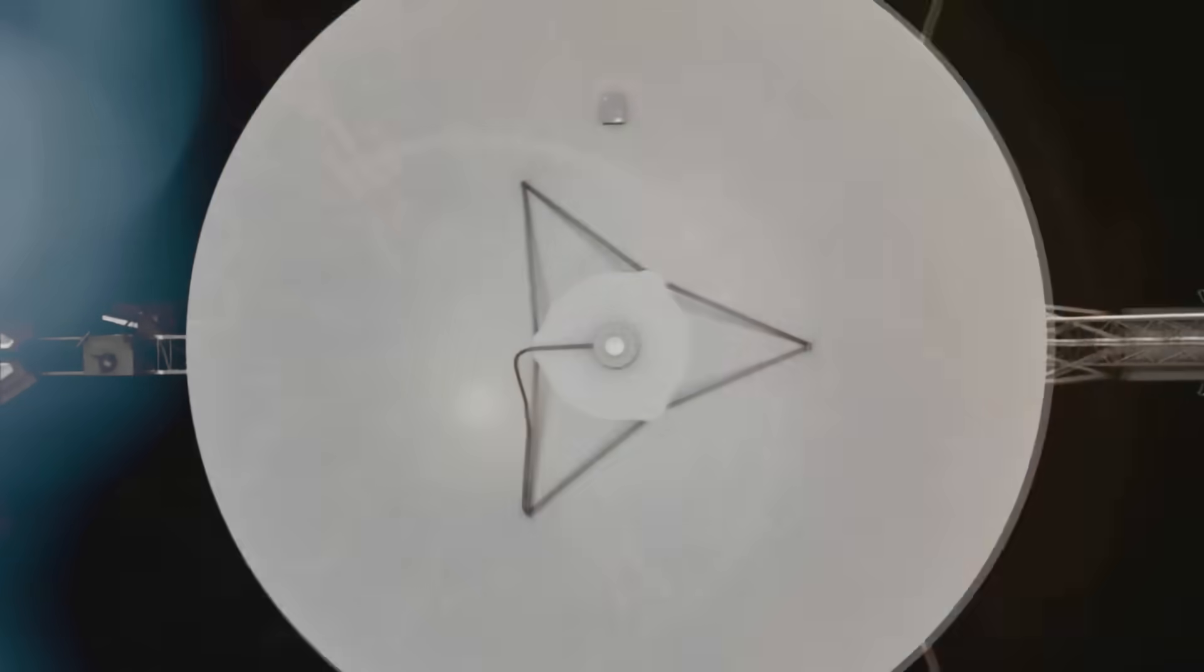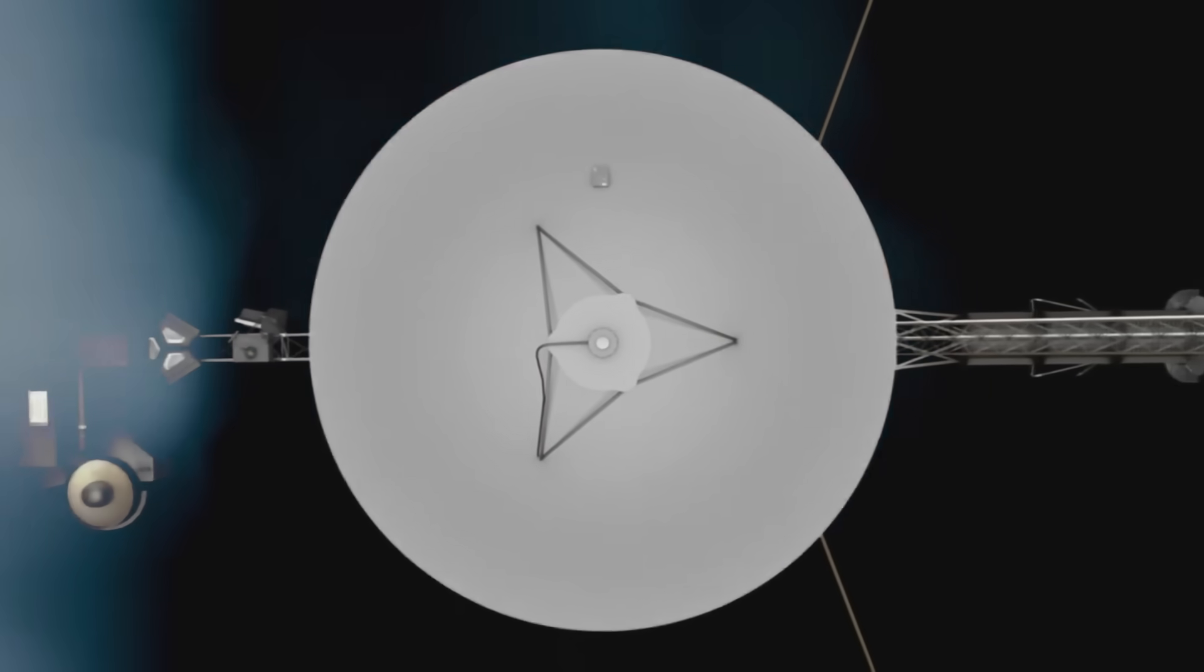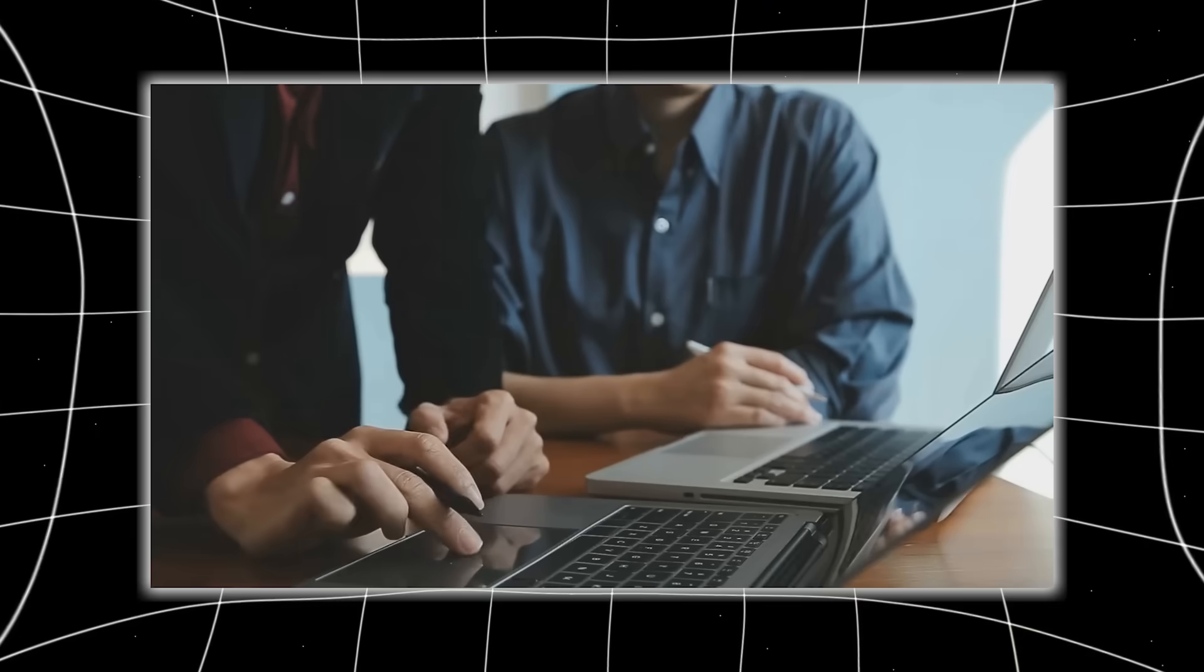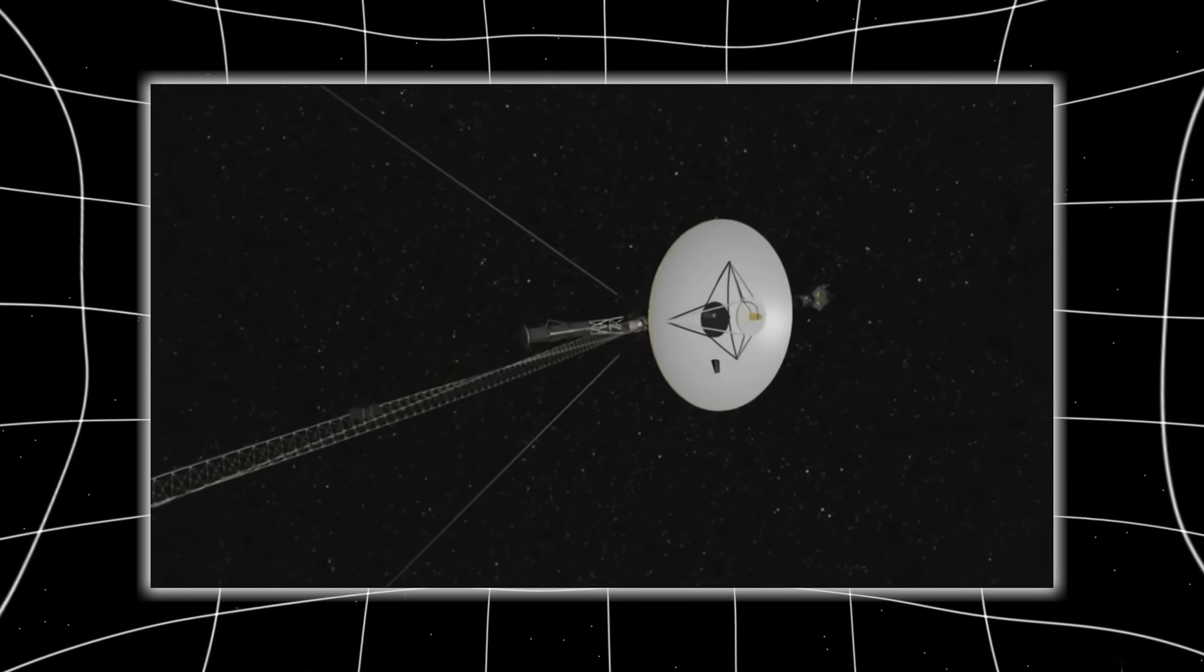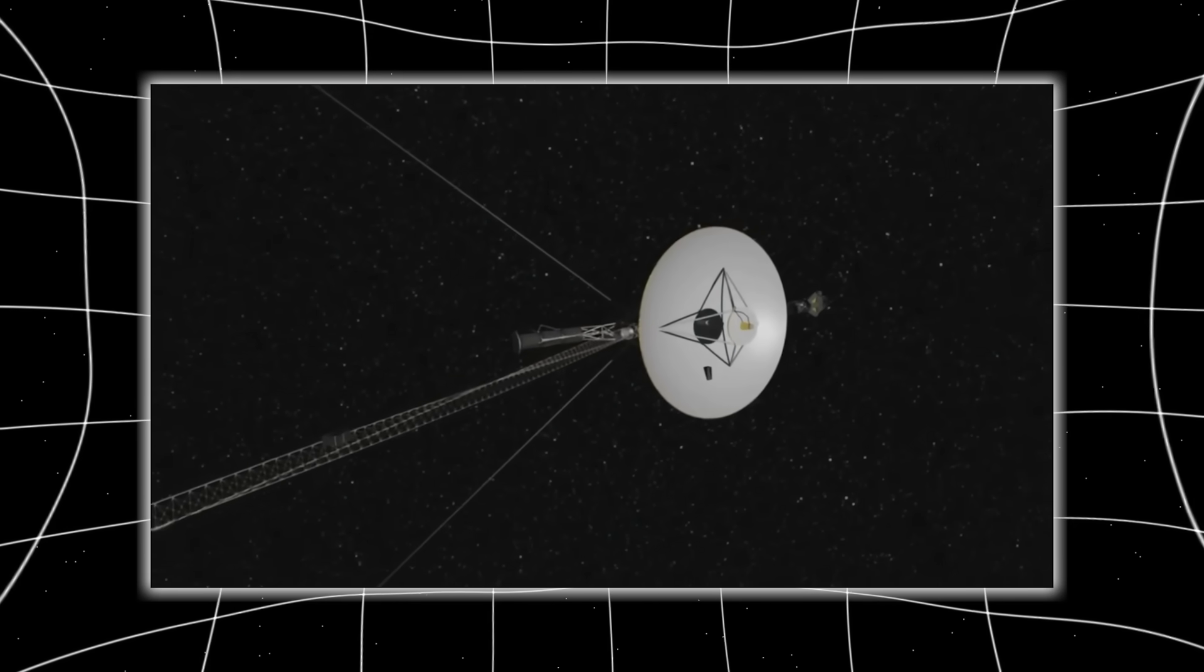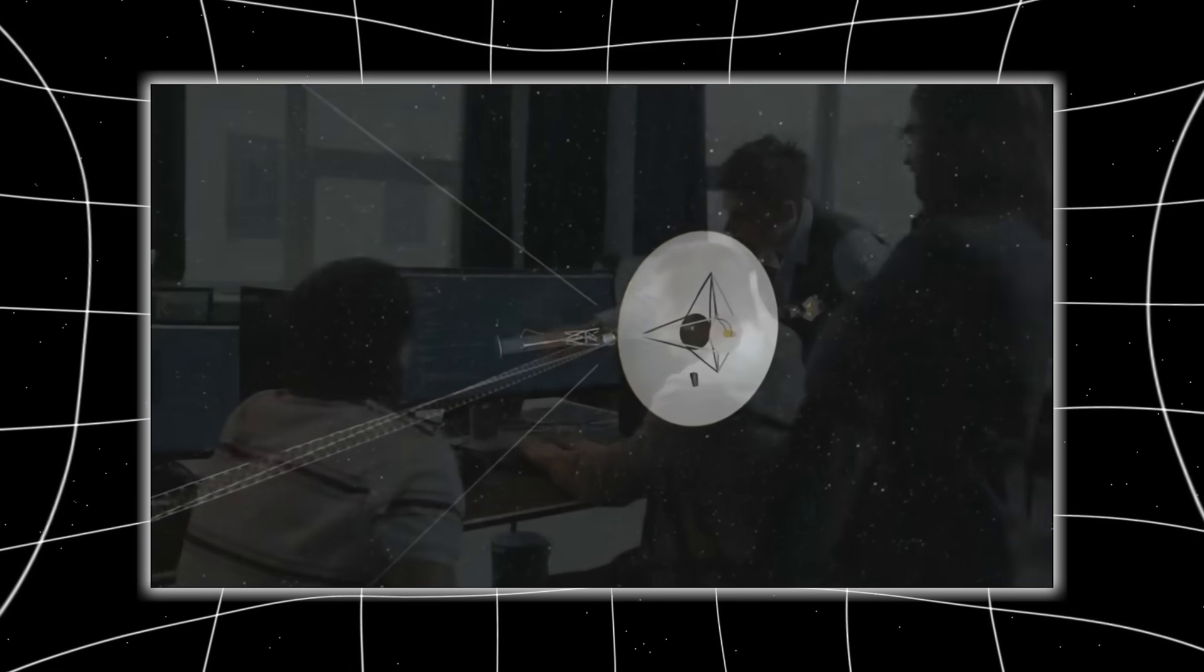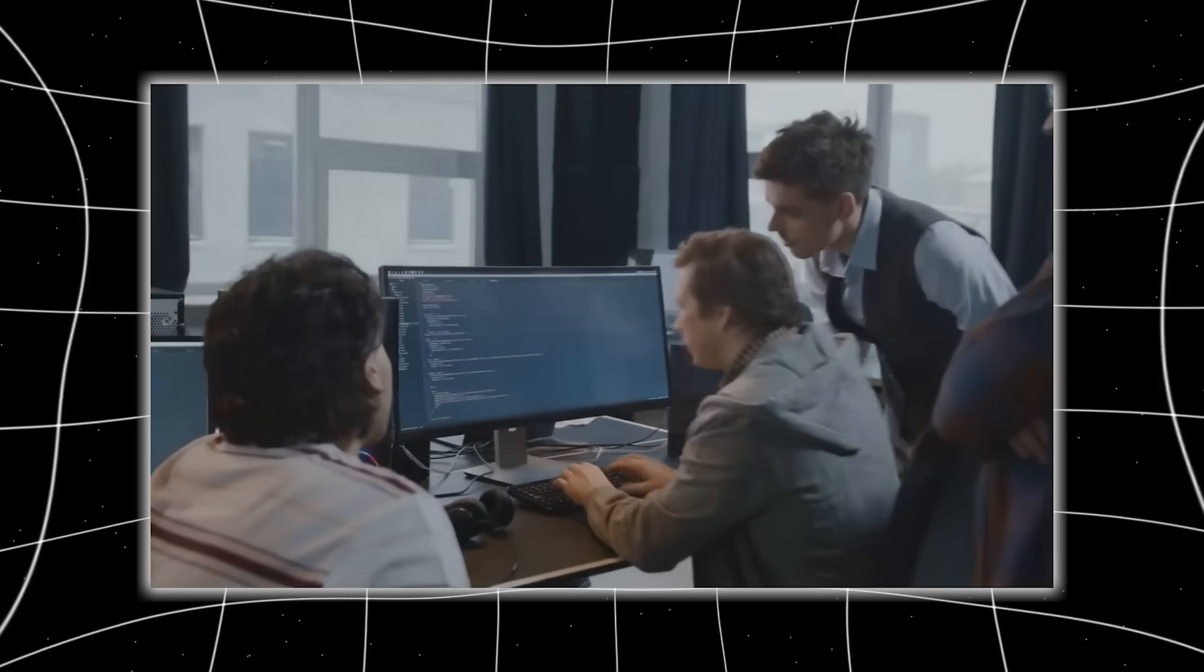What Voyager 2 discovered isn't merely physical. It's philosophical. A wall that breathes. A field that pulses. A boundary that behaves. The structure in the plasma. The pulse in the silence. The spiral in the void. None of these things should exist. And yet they do.